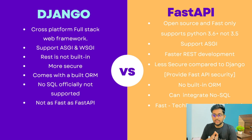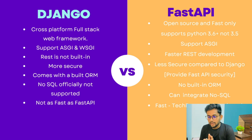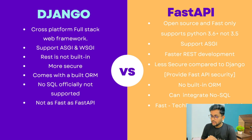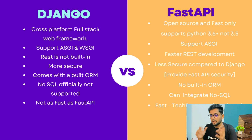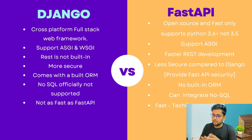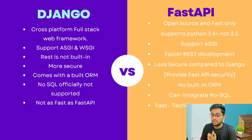Now, which one is faster — Django or FastAPI? Both are fast, but FastAPI is faster than Django. According to the TechEmpower benchmark, FastAPI wins compared to Django. However, this is a very low-level difference. For large applications with many concurrent users, this difference becomes more apparent. For small applications, you may barely notice the difference, but FastAPI is generally faster than Django.